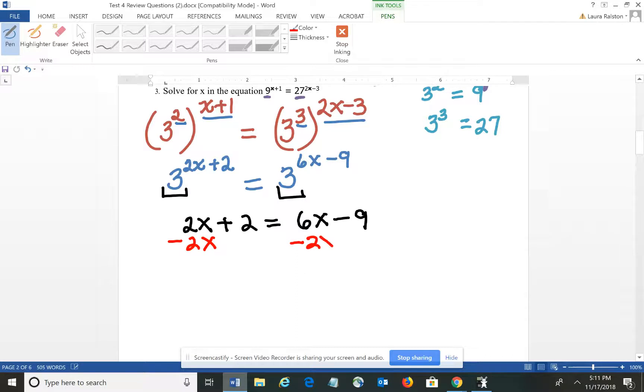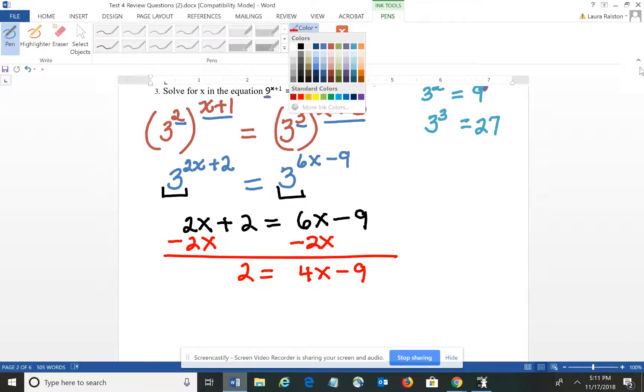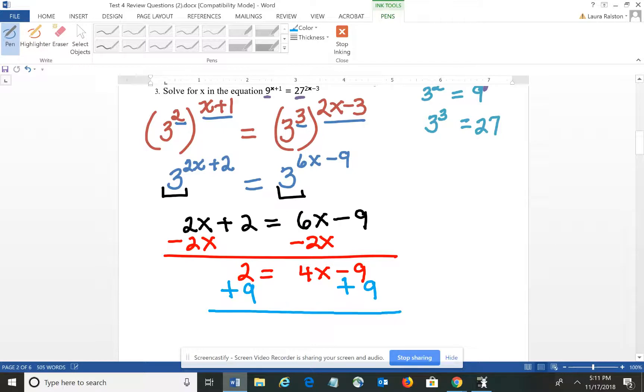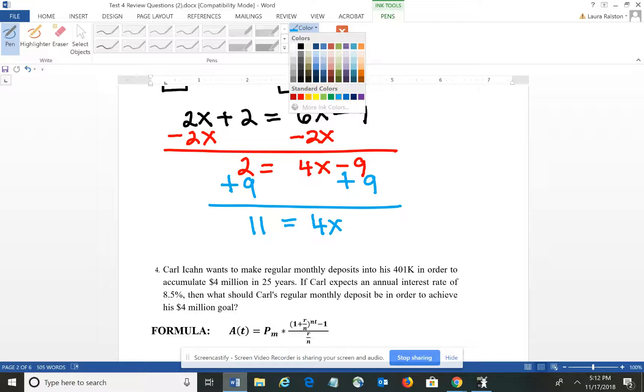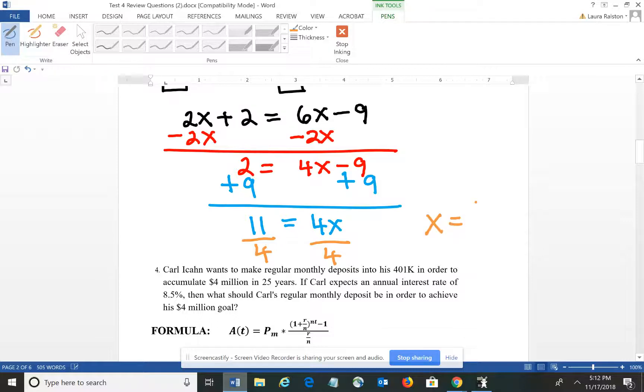So I'm going to subtract 2X from either side. I have 2 equals 4X minus 9 and then I'm going to add 9 to either side. So I have 11 equals 4X, I'm then going to divide both sides by 4 to isolate the X. So I end up with X equals 11 fourths. So I've solved the equation – the original equation for X where X is equal to 11 fourths.